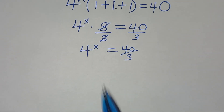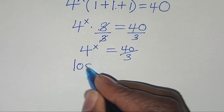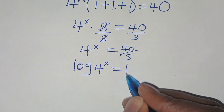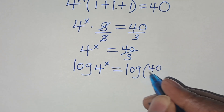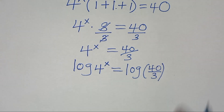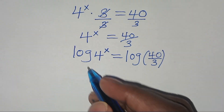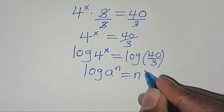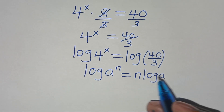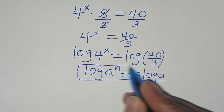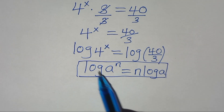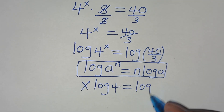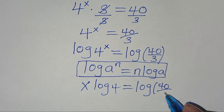The next step to solve for the value of x, we introduce logarithm on both sides. We use the power rule of logarithm: log(4 to the power x) is in the form of log(a to the power n), which we can express as n·log(a). Applying this power rule of logarithm, log(4 to the power x) becomes x·log(4), and this is equal to log(40 over 3).